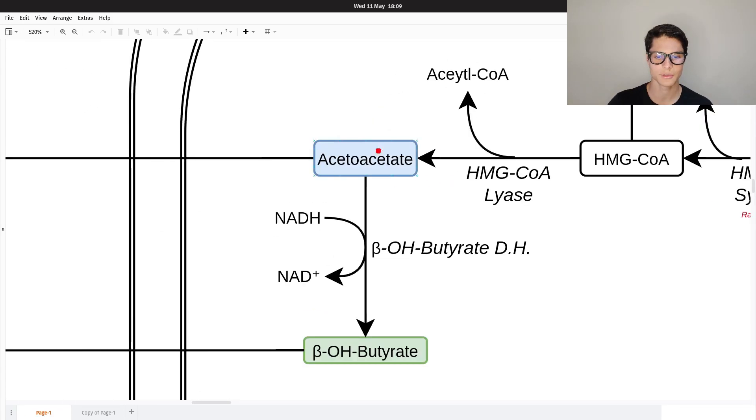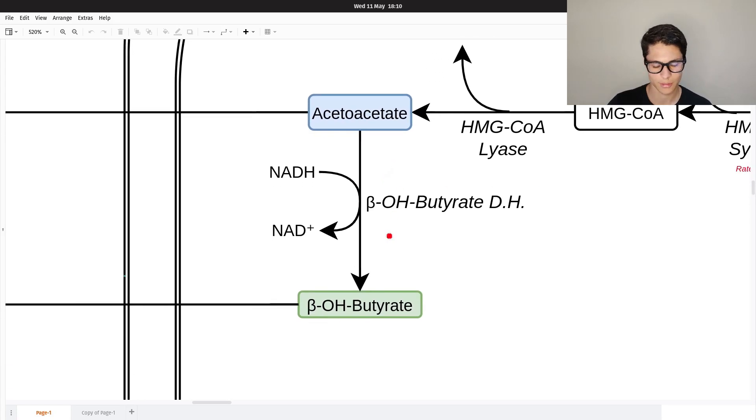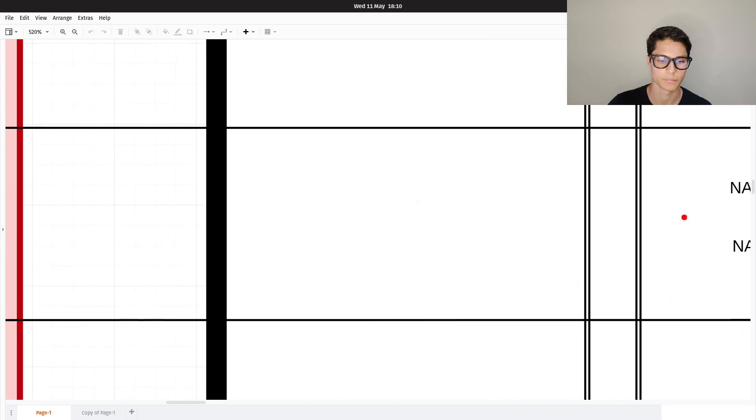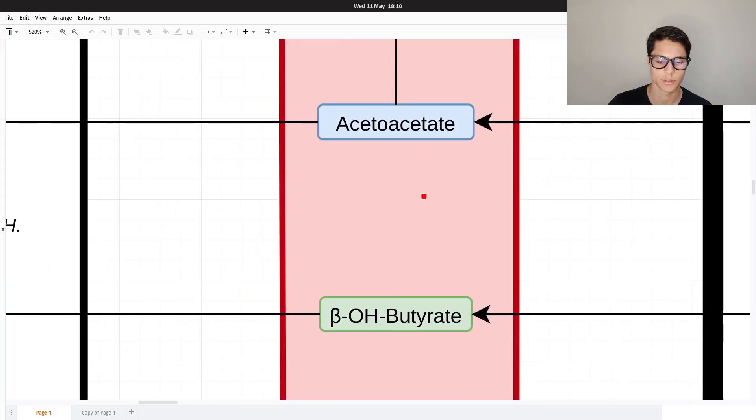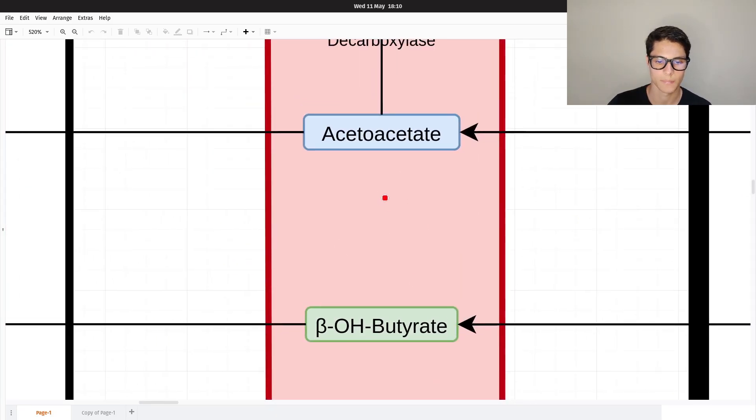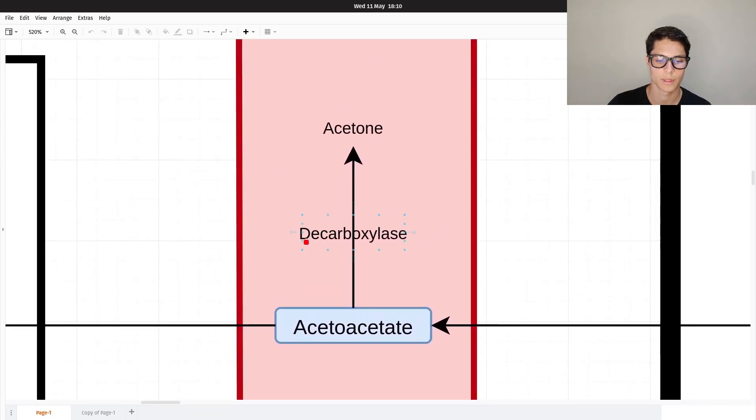Acetoacetate is one of the two ketone groups. To create the second ketone group, beta-hydroxybutyrate, we're going to use beta-hydroxybutyrate dehydrogenase which converts NADH to NAD+. This step is reversible. These two ketones leave the mitochondrion and get inside the bloodstream, and here acetoacetate via decarboxylase can create acetone.